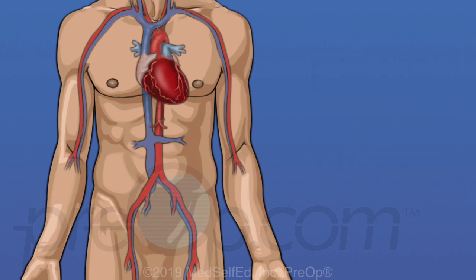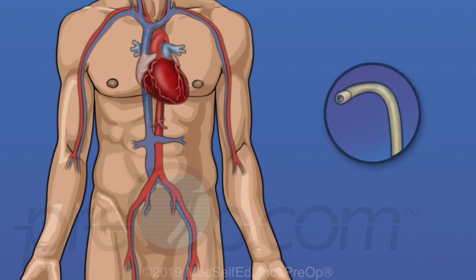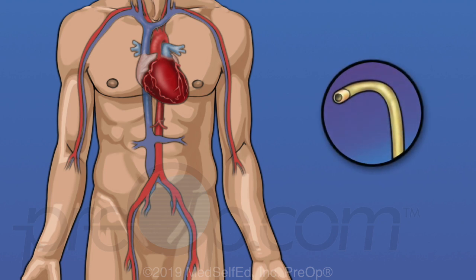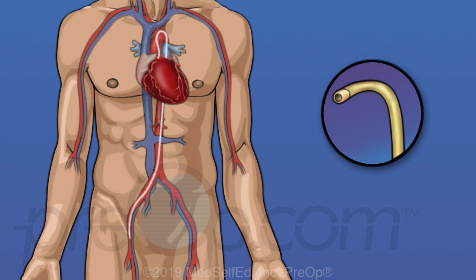To do a cardiac cath, a cardiologist places a thin tube called a catheter through an artery in your leg or arm to reach your heart. The femoral artery in the leg is most commonly used. The catheter is inserted into the artery in the groin, then guided to reach the heart.